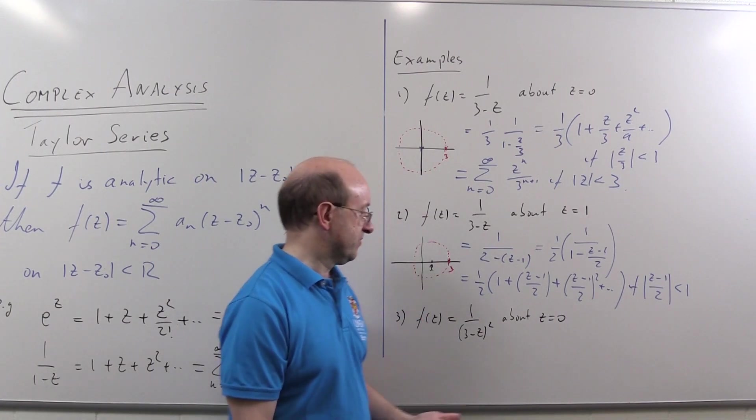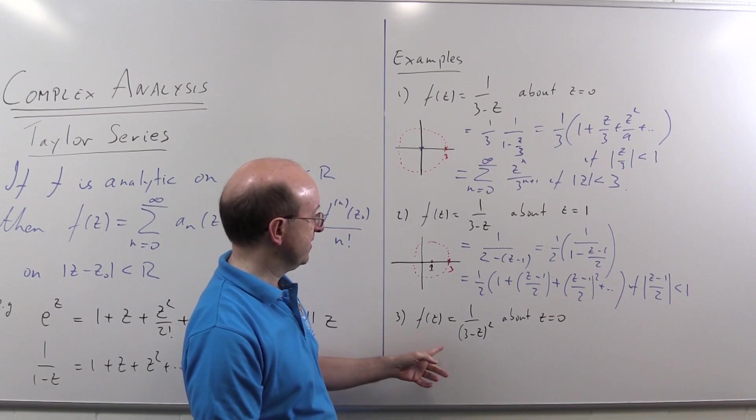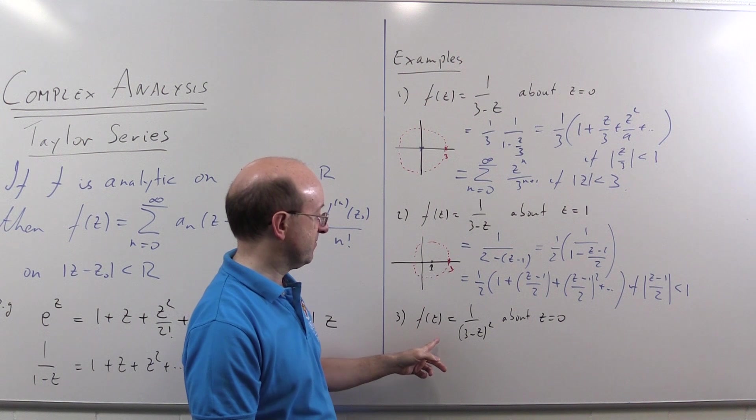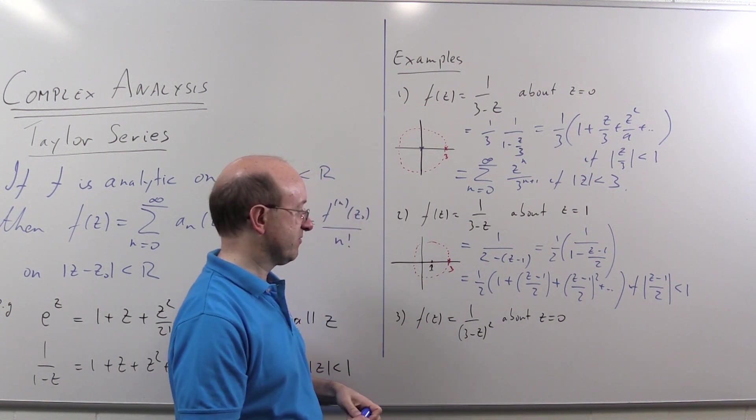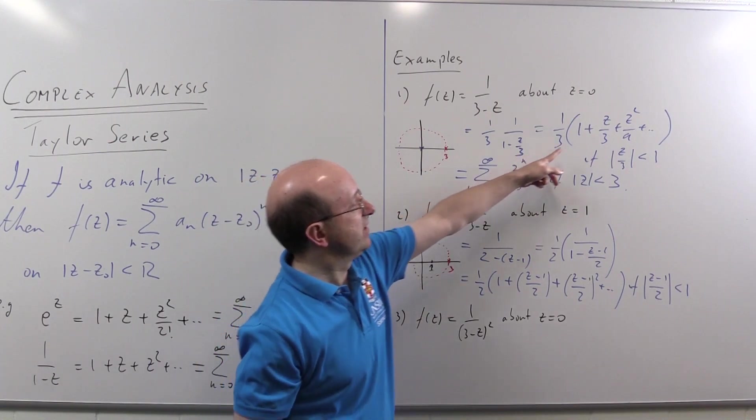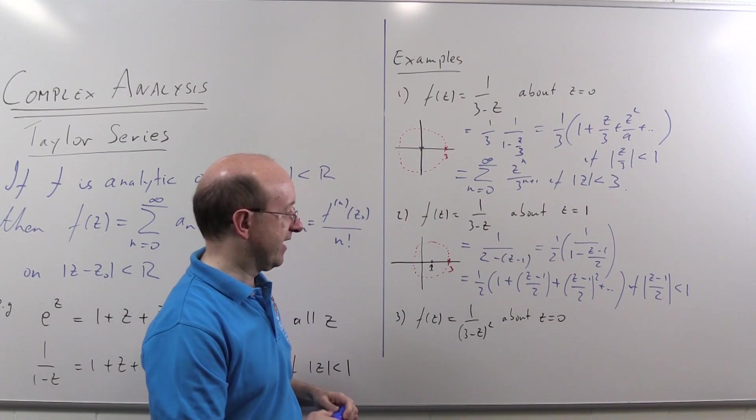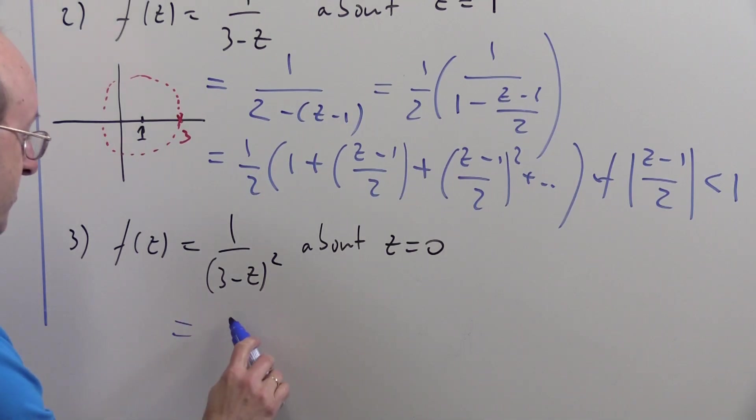All right. Now, just to top off, we can look at the situation where we differentiate. And, as I said, we can just differentiate a power series term by term. If you want the series of one over z minus three squared around z equals zero, we've just got to differentiate this term or that one, whichever one you like. And we'll get convergence in the same disk.